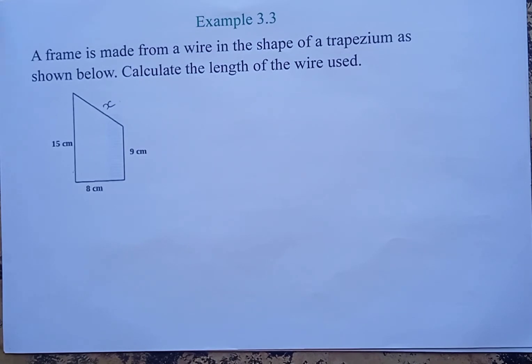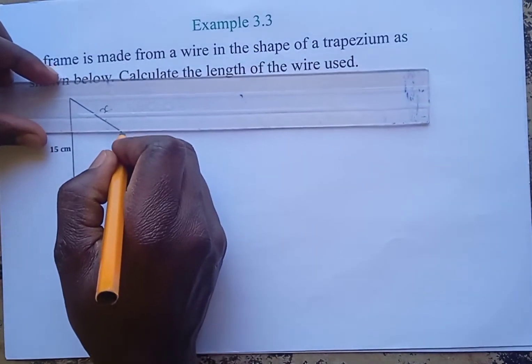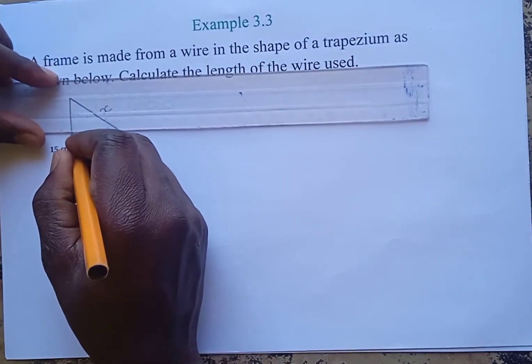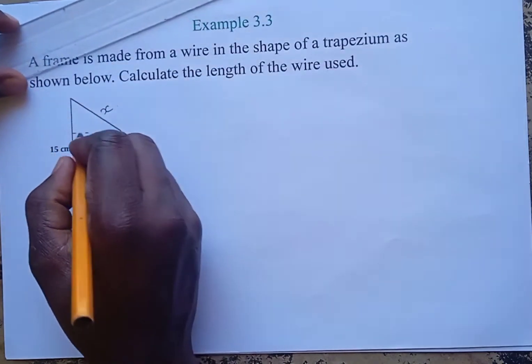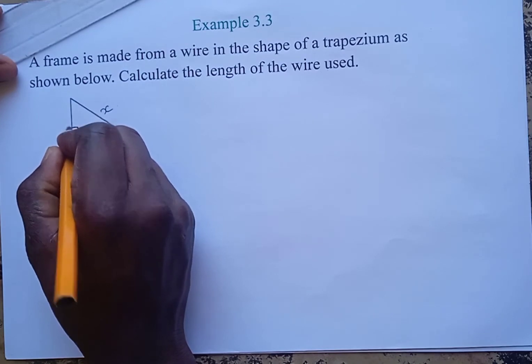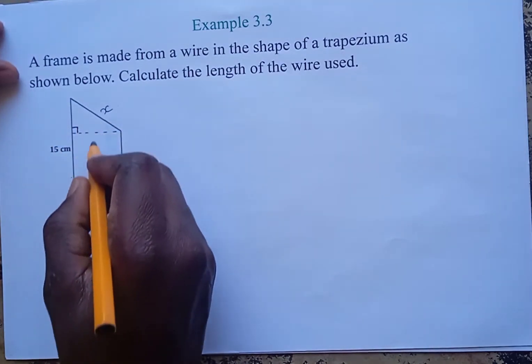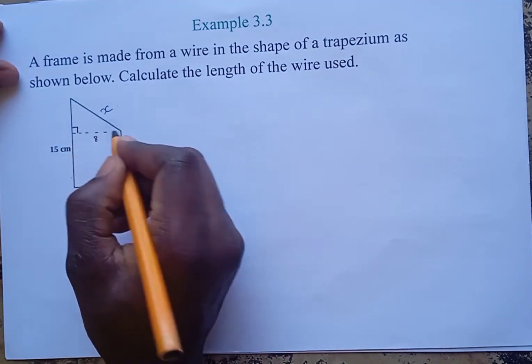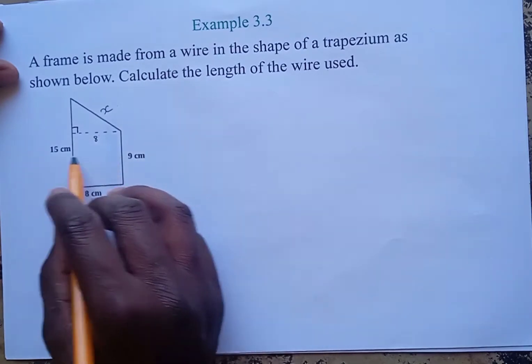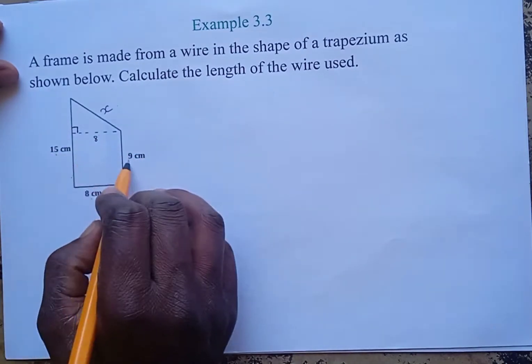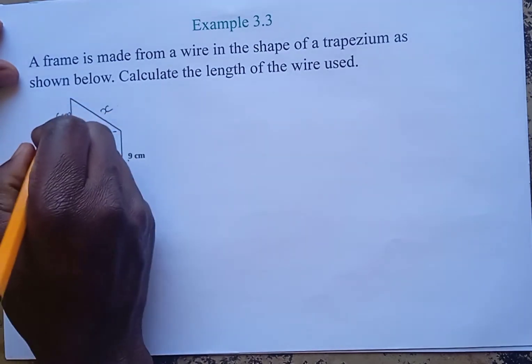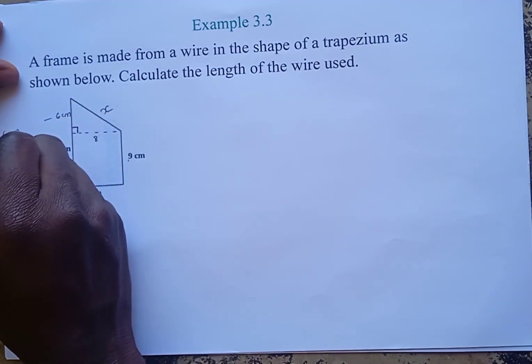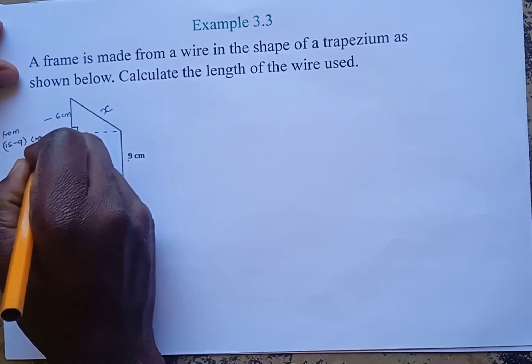To get the perimeter, we have to find the length of X. We divide the trapezium into a rectangle and a triangle. We have a triangle there whose hypotenuse is X, one of the lengths is 8, and the other length will be 15 minus 9 centimeters, which is 6.